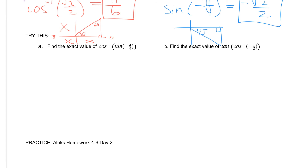If you did letter A correctly, you should have gotten an answer of pi. And if you did letter B correctly, you should have gotten an answer of negative square root of 3. If you have questions on either one of these, let me know.